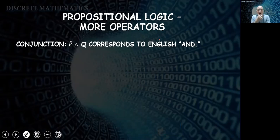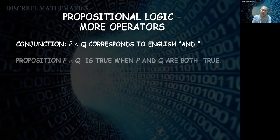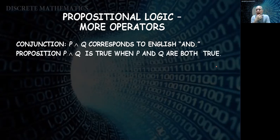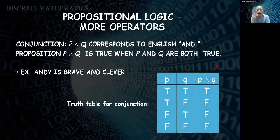Conjunction corresponds to the word 'and.' If I say P conjunction Q, it means P and Q. The proposition P and Q is true only when both P and Q are true. If either one is not true, the whole proposition is false. For example, 'Andy is brave and clever' is only true if Andy is both brave and clever. The truth table: when P is true and Q is true, the result is true; for all other combinations where either or both are false, the result is false.